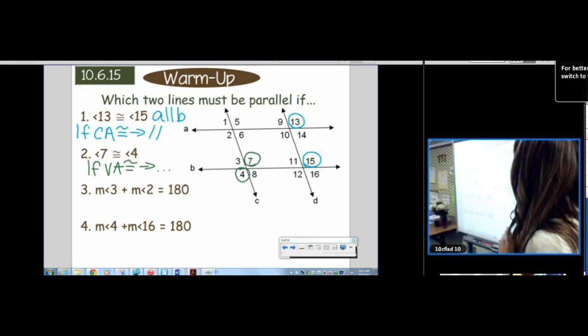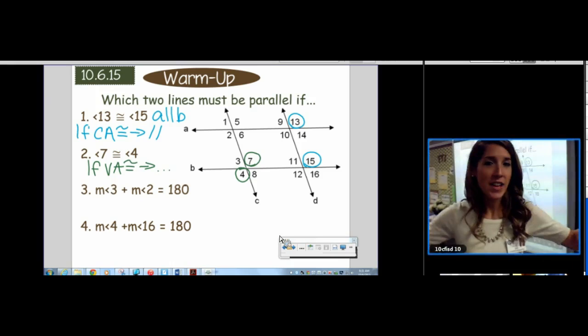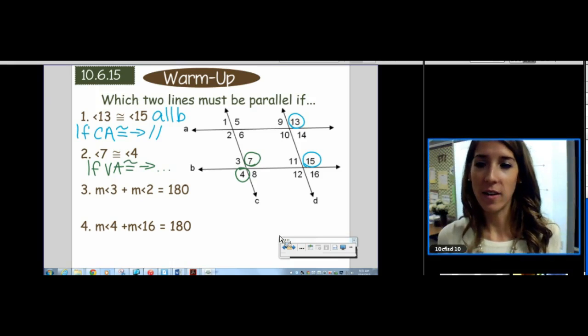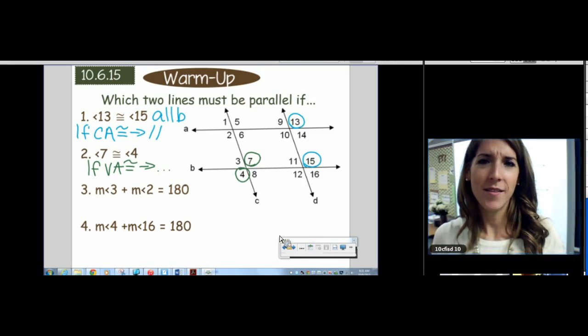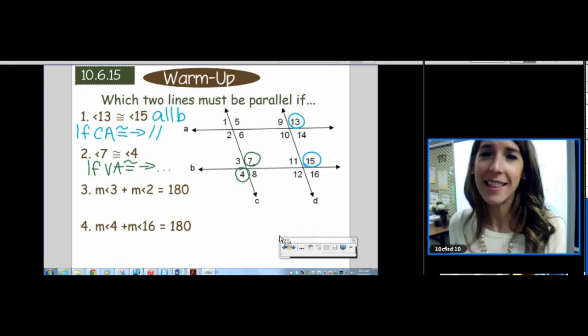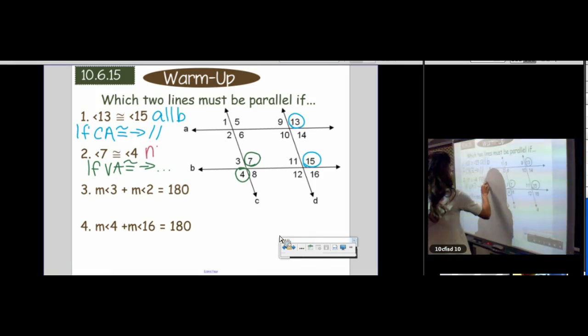So what I was saying is that if vertical angles are congruent, and then I just put dot dot dot. No, they do not imply that two lines are parallel. That's not a theorem. If vertical angles are congruent, well wait a minute. Vertical angles are always congruent. It doesn't mean anything happened. So the answer to number two would be none.